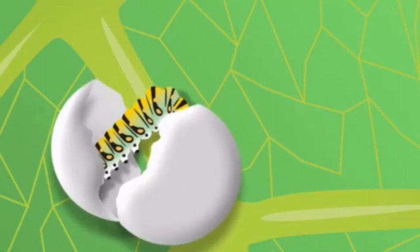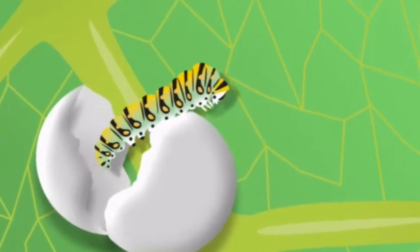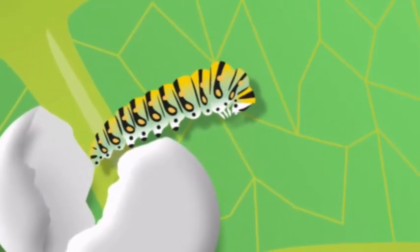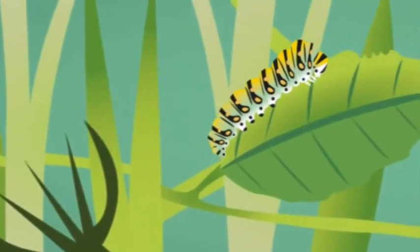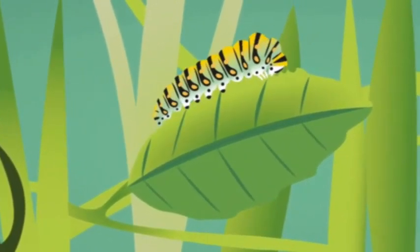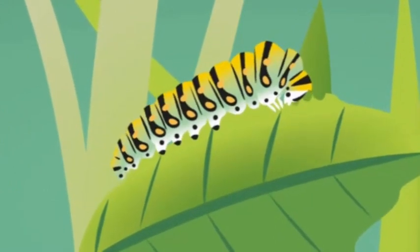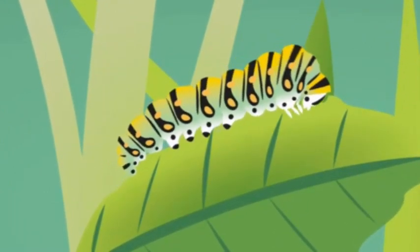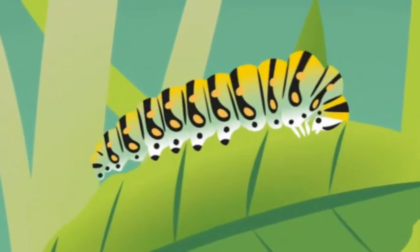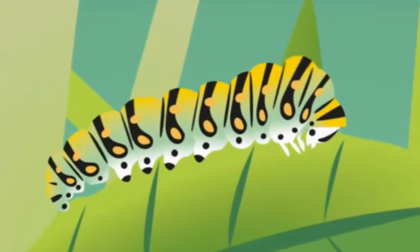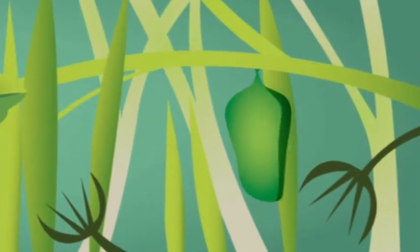Look, it's a caterpillar! It's coming out of the egg. It's green, yellow, black, and white. The caterpillar is hungry. It's eating the leaf. Munch, munch, munch. Caterpillars like leaves. The caterpillar eats and eats and eats. Soon the caterpillar makes a cocoon.